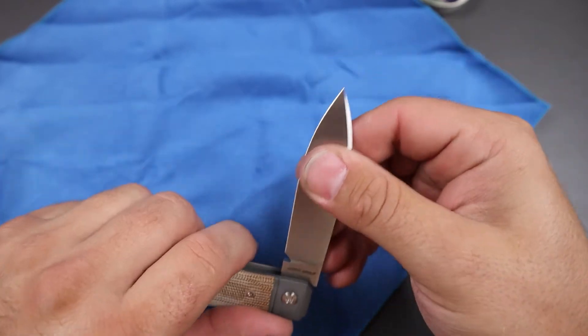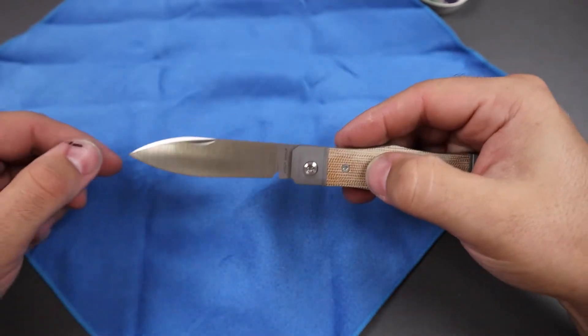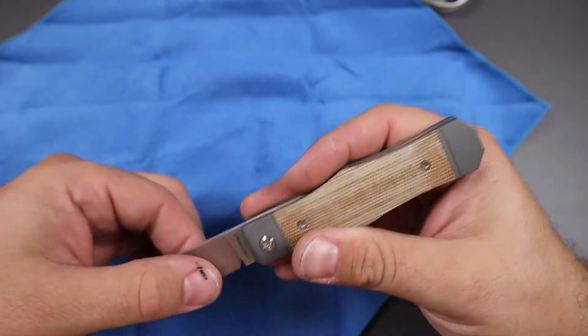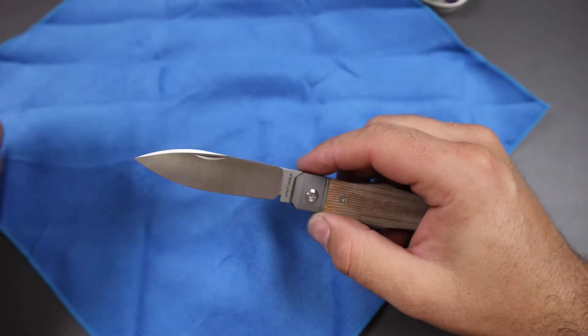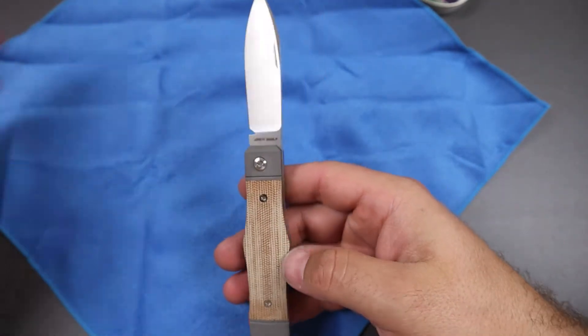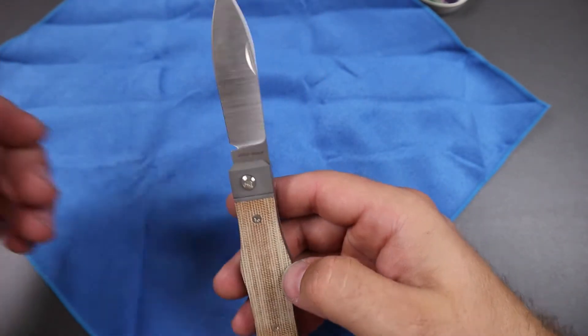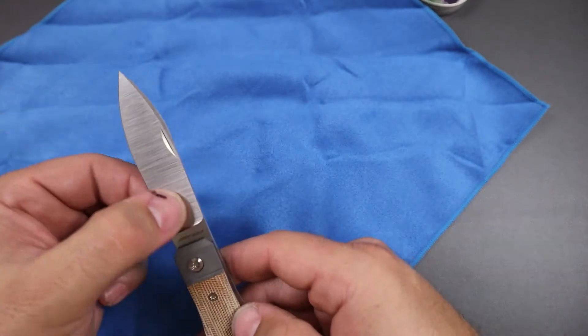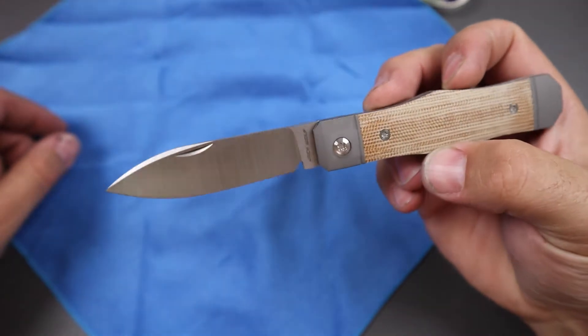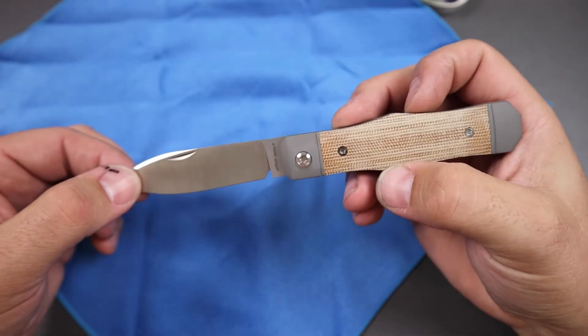We have this kind of spear point drop point blade. It is a very nice, very thin hollow grind. I like that a lot. While I do tend to be drawn to Wharncliffe type shape blades like that, Wharncliffe sheep's foot, I do actually quite like this spear point drop point because it is